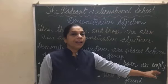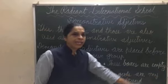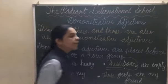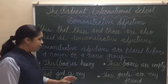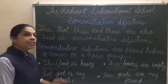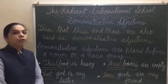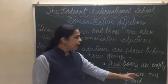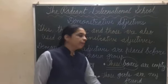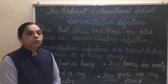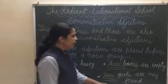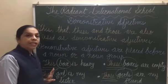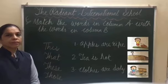For example: 'These boxes are empty.' Here, 'these' is the demonstrative adjective, and 'boxes' is the noun. Next example: 'That girl is my sister.' Here, 'that' is the demonstrative adjective, and 'girl' is a noun. 'Those girls are my friends.' Here, 'those' is the demonstrative adjective, and 'girls' is the noun. So we can see that the demonstrative adjective always comes before the noun.